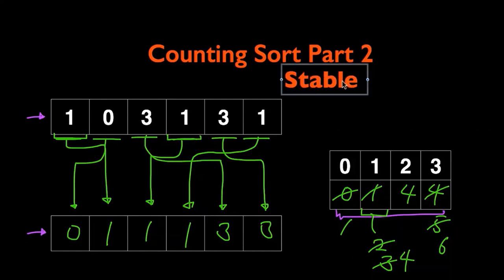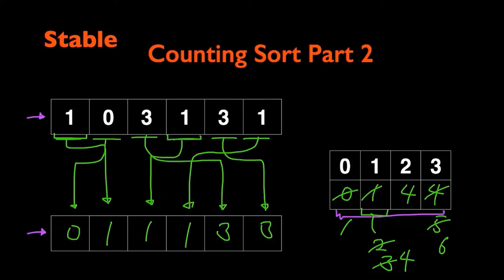This process makes counting sort a stable sorting algorithm. That means for different instances of the same value, the order in original and the sorted array will remain the same.